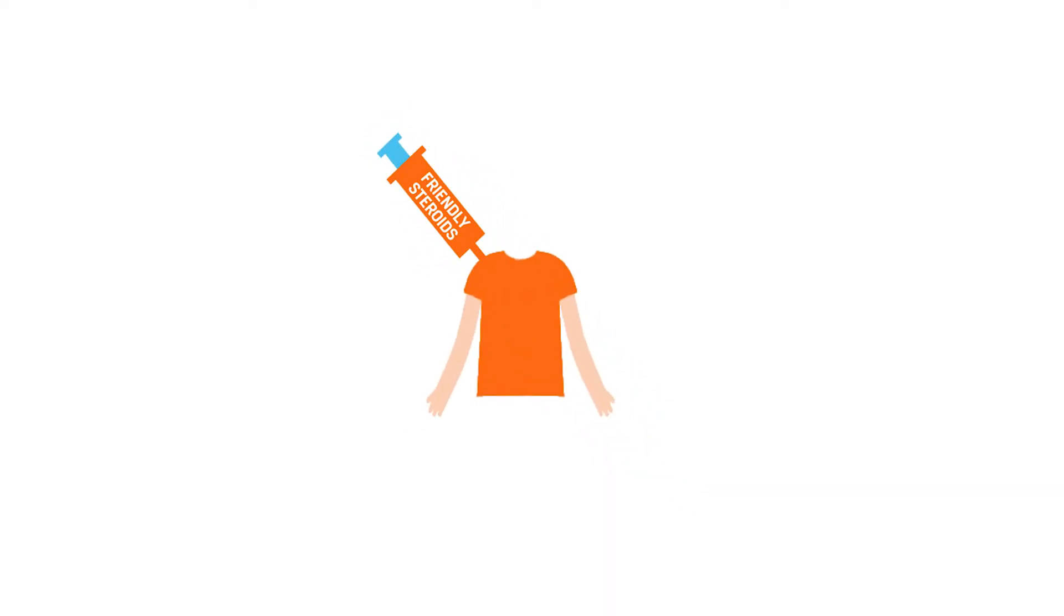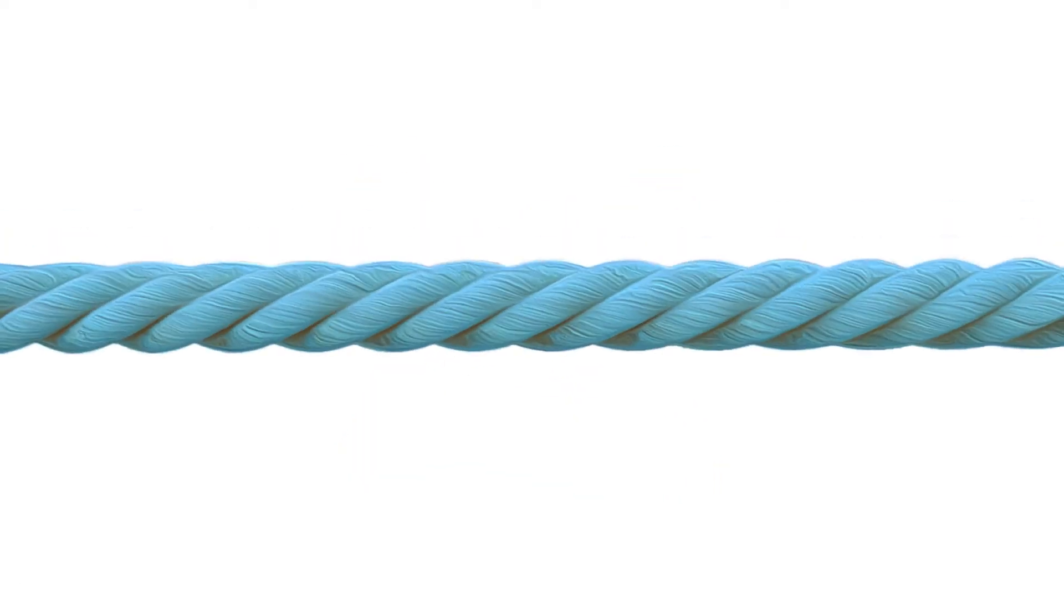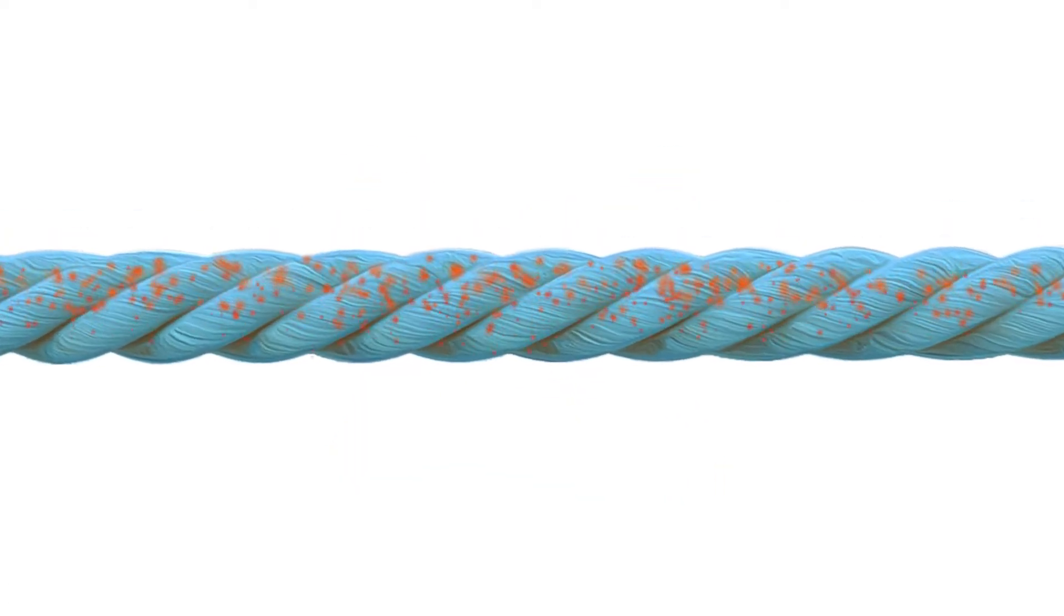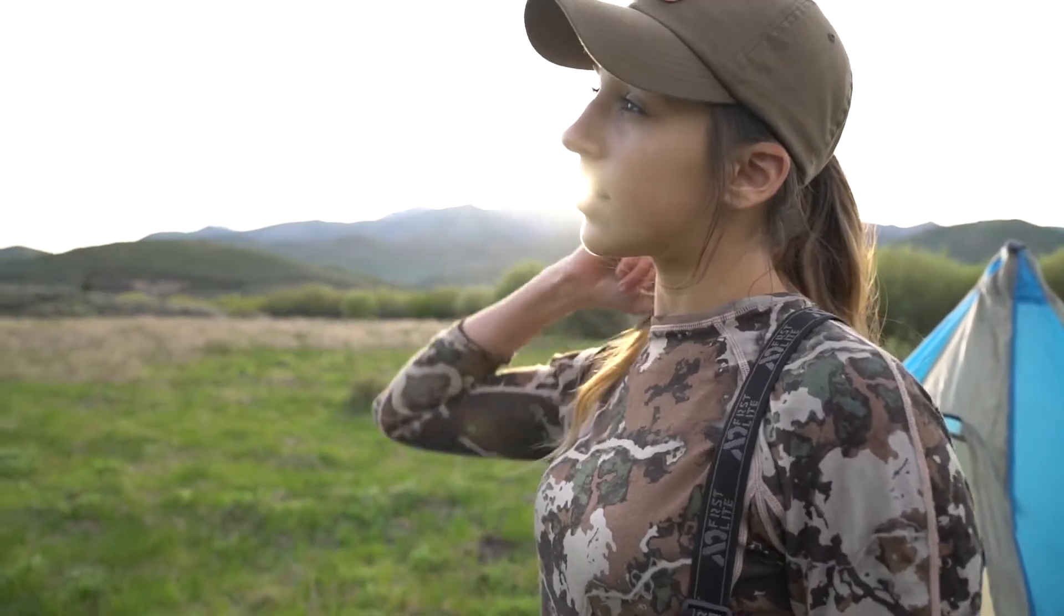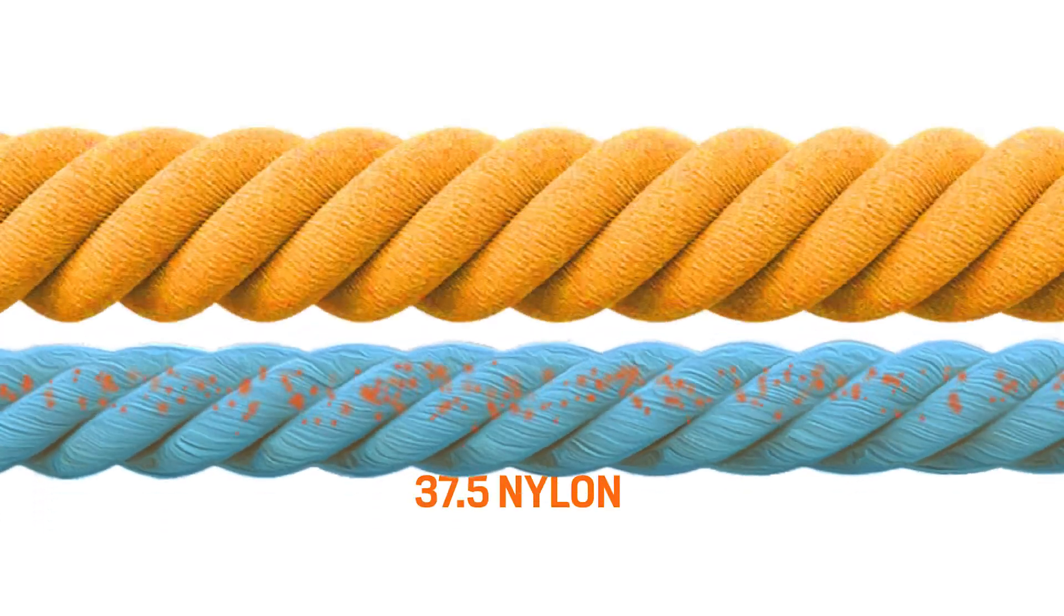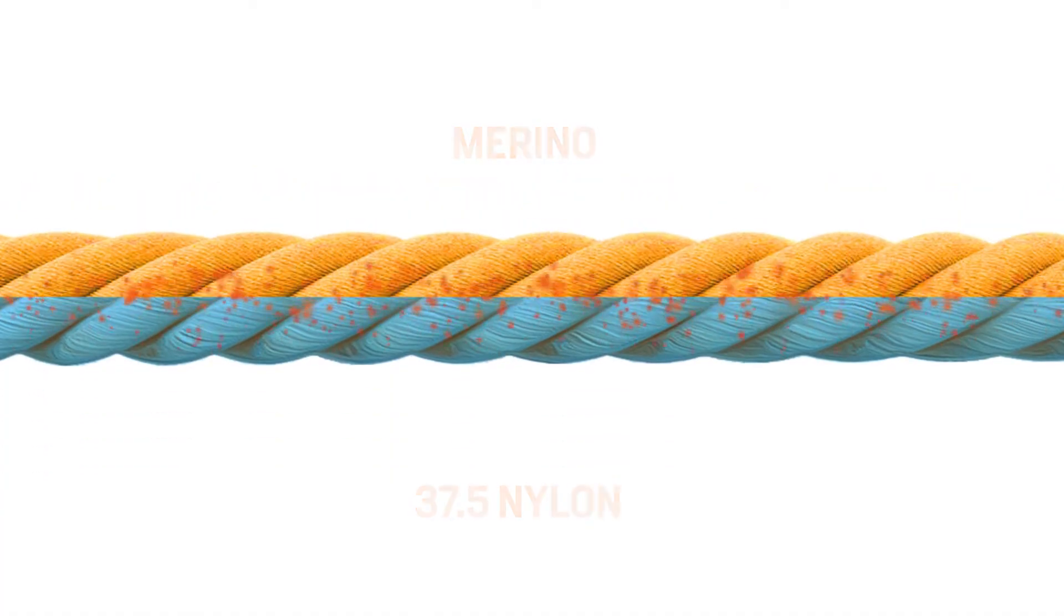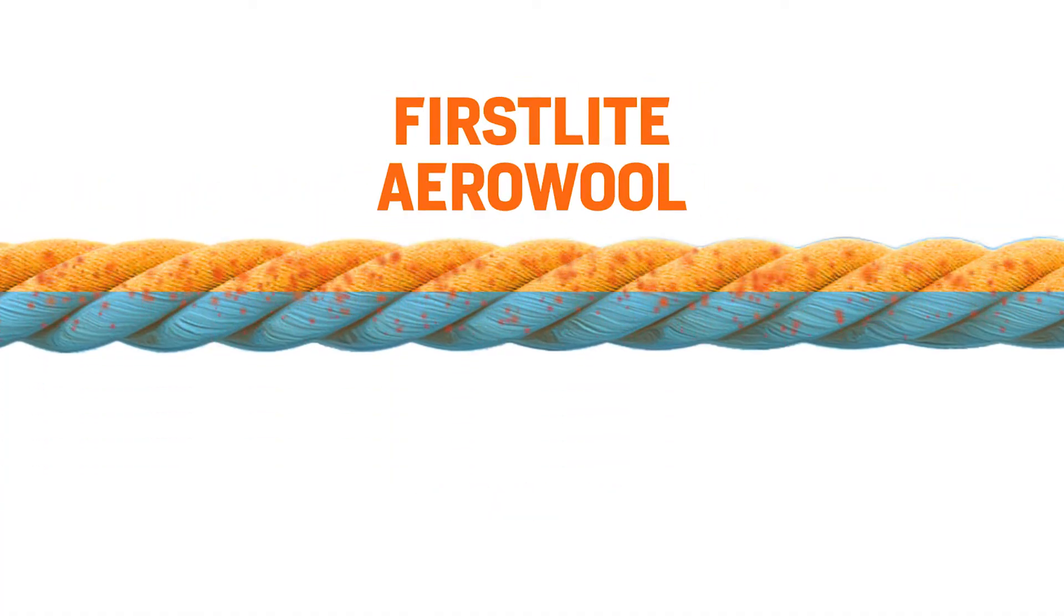You can think of it as friendly steroids for clothing. Fibers with 37.5 particles can be integrated into a number of different kinds of garments, from base layers to rain gear. First Light's revolutionary arrow wool line is the result of adding 37.5 nylon to merino, marrying the benefits of both wool and 37.5 infused synthetics.